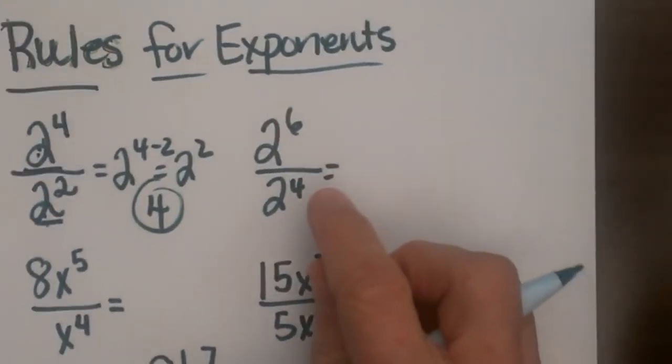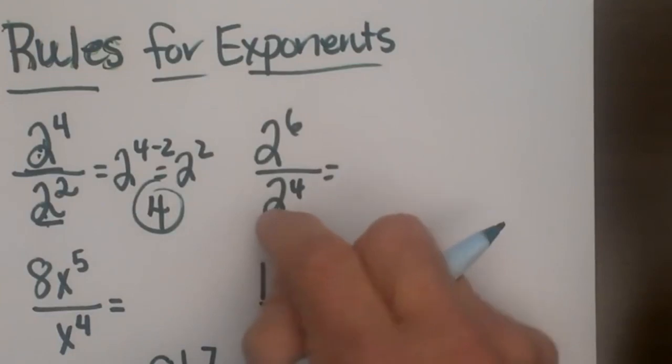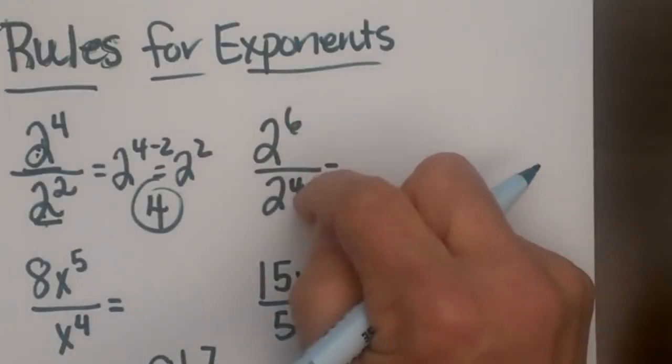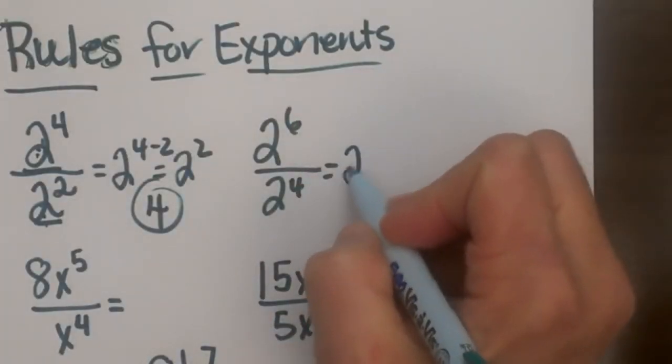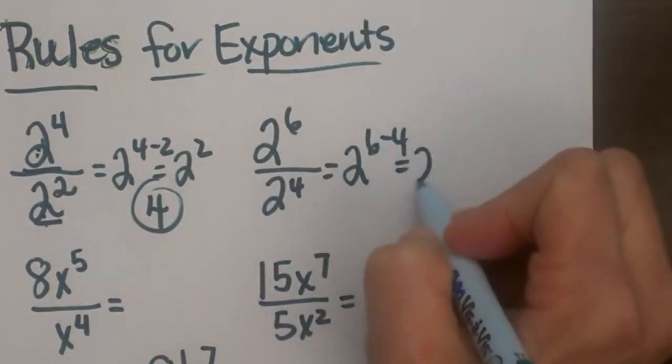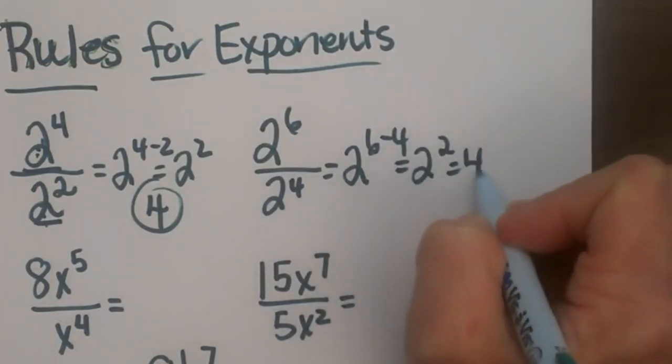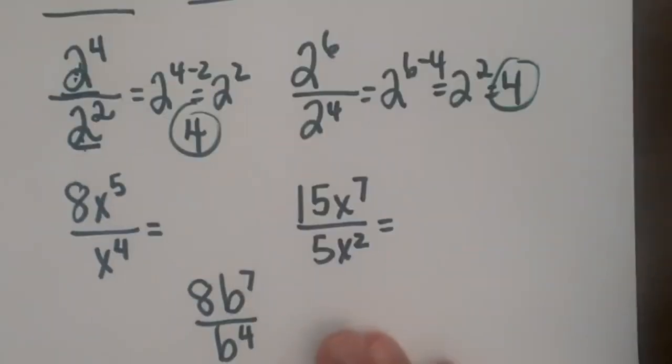Okay, so here's another one. We've got like bases of 2 again. We've got the exponents of 6 and 4, so that's going to be 2 to the 6 minus 4, which is 2 squared also, which is 4. So a couple different ways to get 4.